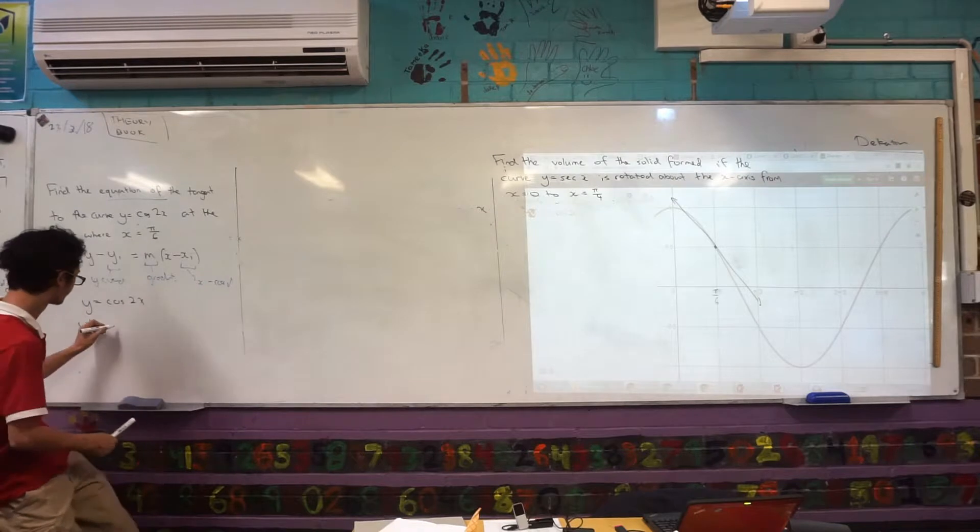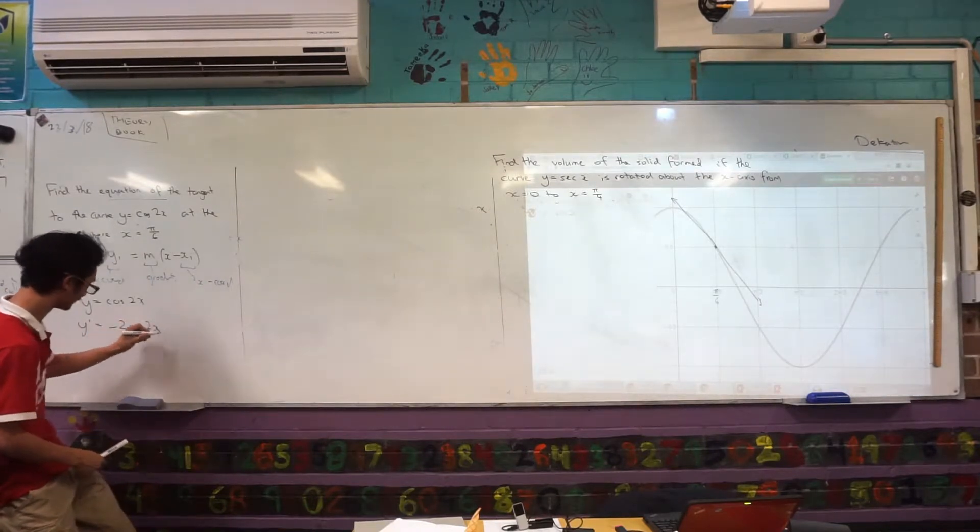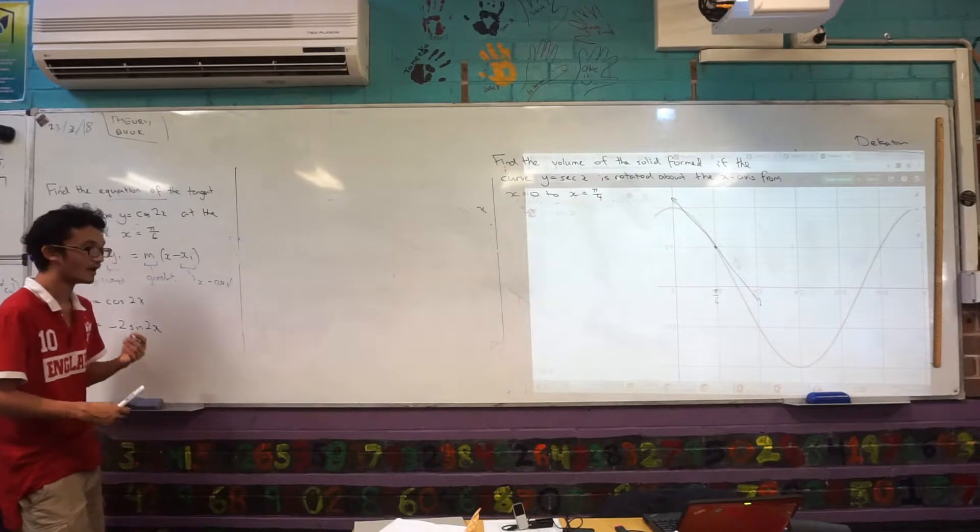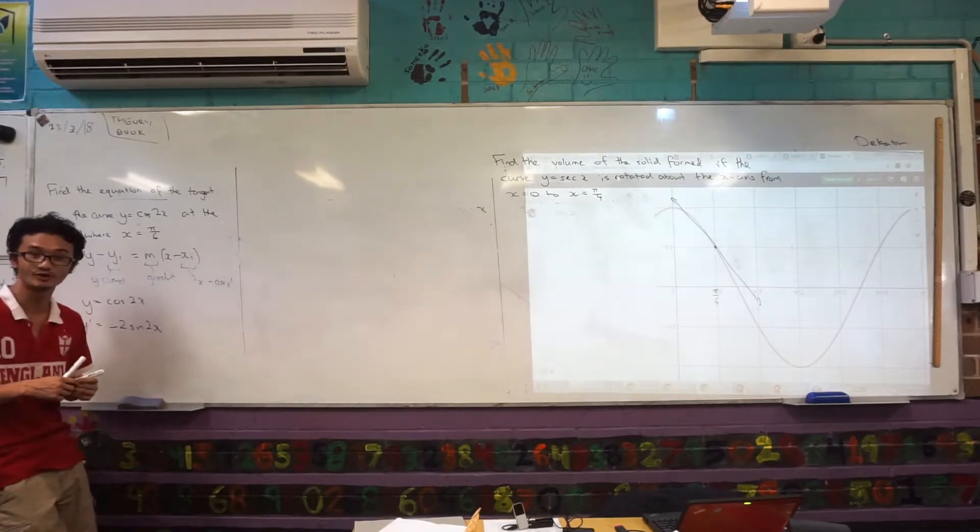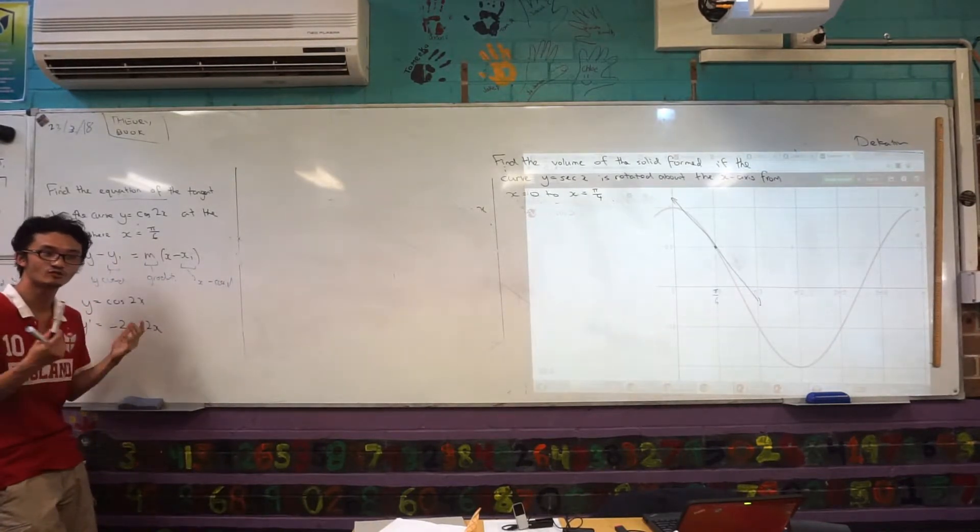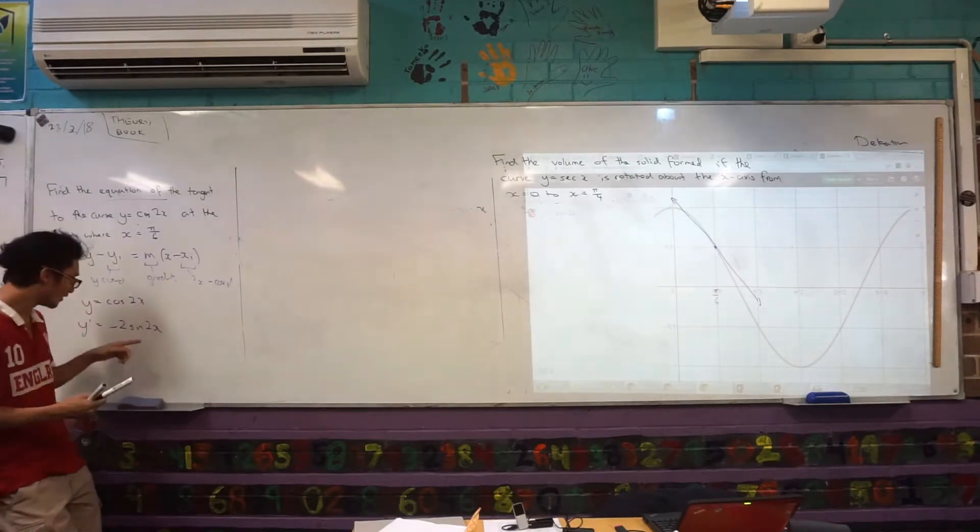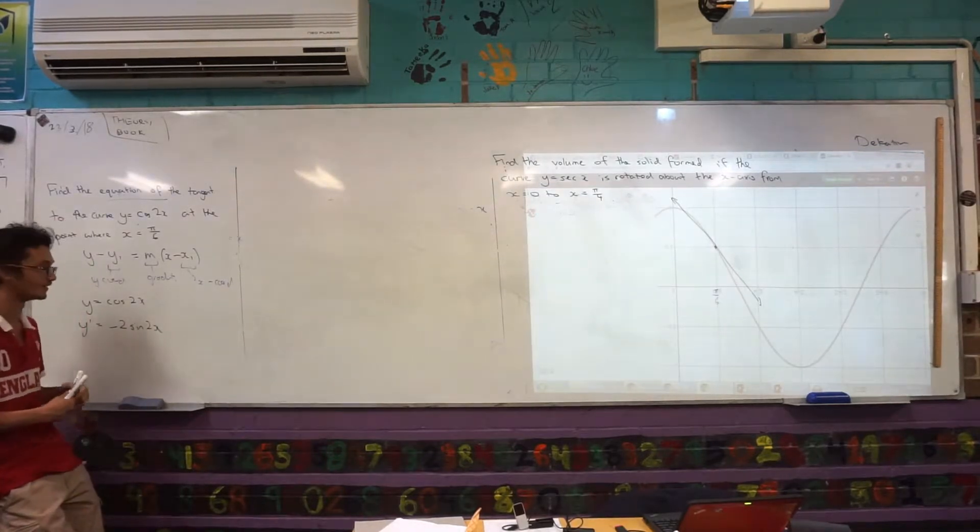Negative 2 sine 2x. Good, that's pretty straightforward. But then you want to think, I actually want the gradient at a specific point, don't I? Put π/6. Yeah, so what would I need to do with that? Sub in π/6. Let's substitute π/6 at this point.